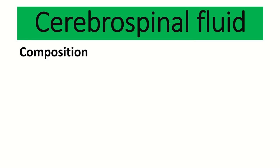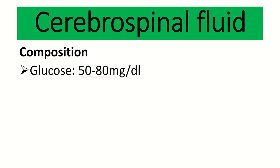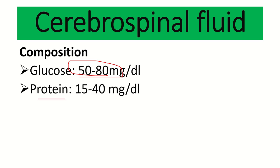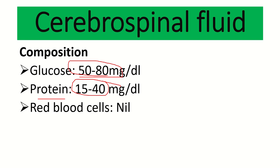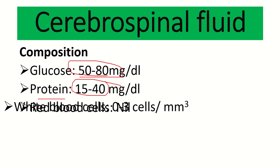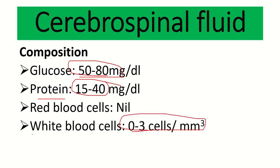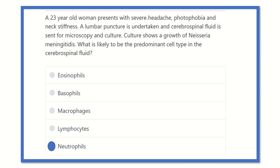Regarding CSF composition: glucose is present at 50–80 mg/dl, because glucose is the primary and most important food for the brain. Protein concentration is typically low compared to glucose. Red blood cells are usually absent in normal CSF. White blood cells are present at 0–3 per cubic millimeter; these act as the defensive system, killing any organisms that enter the brain.